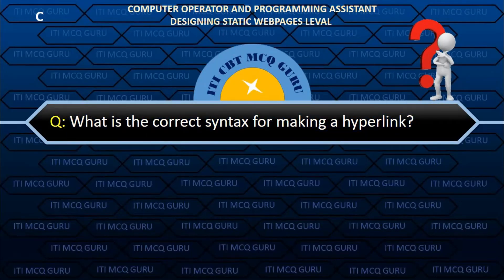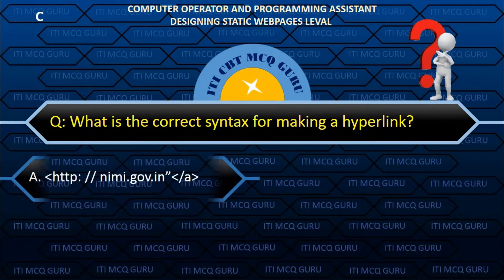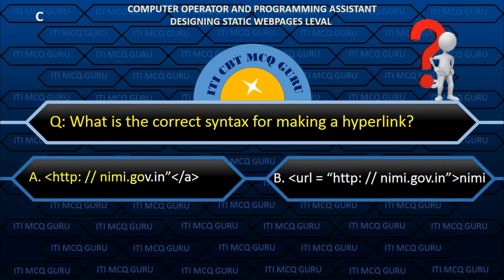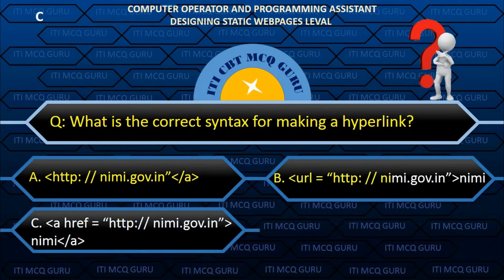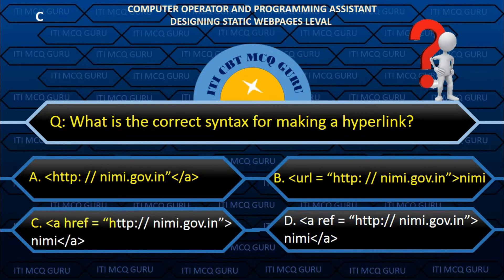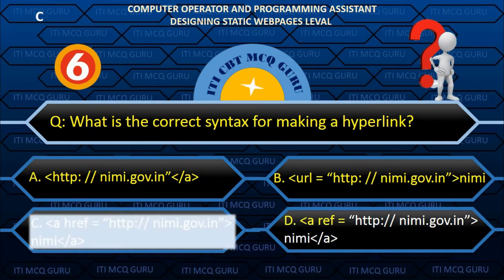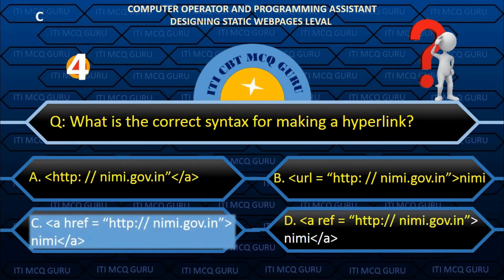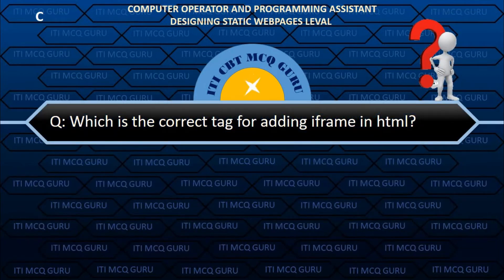What is the correct syntax for making a hyperlink? C. a href equals http://nimi.gov.int nimi /a.